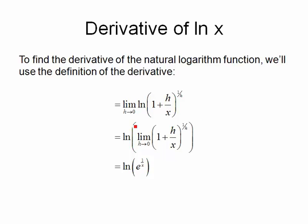So back in our limit, we just figured out that as I get h values smaller and smaller, that expression gets closer and closer to e to the 1 over x.